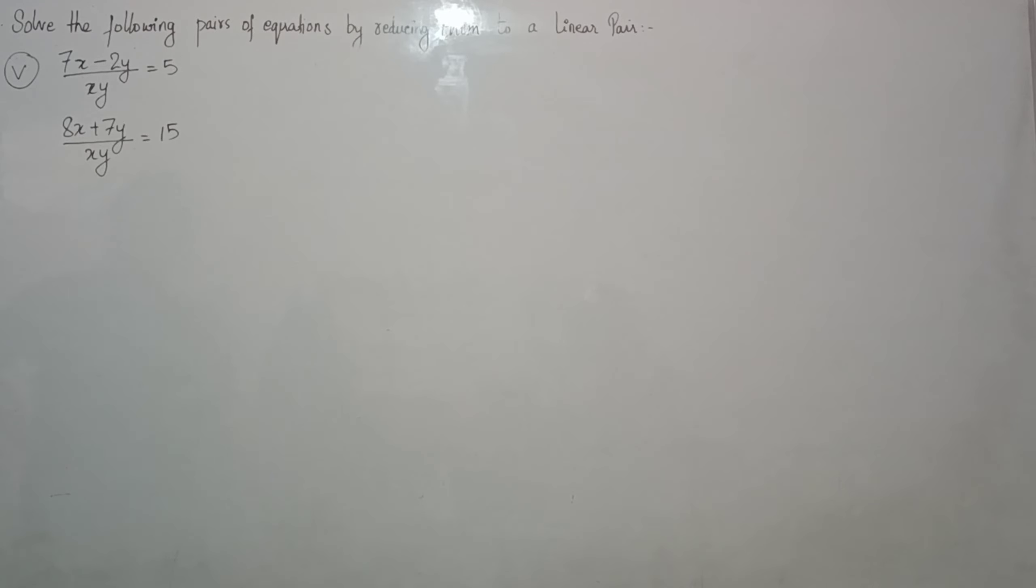Exercise 3.6, question number 1, part 5. Solve the following pair of equations by reducing them to a linear pair. In previous questions we saw that the denominators were different and the variables were in the denominator. But here, we have numerator with variables and denominator with variables, so what we're going to do is separate these variables.